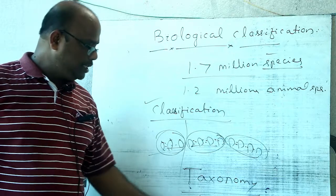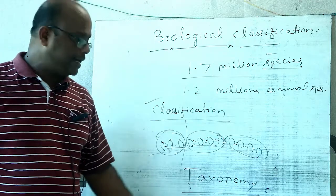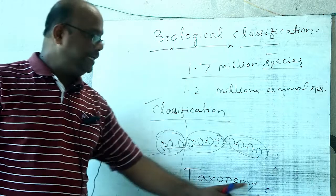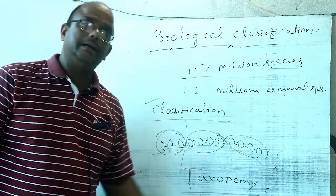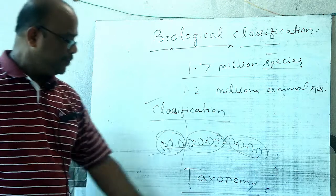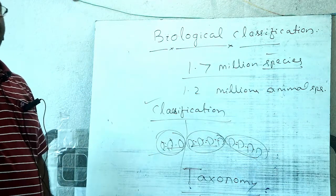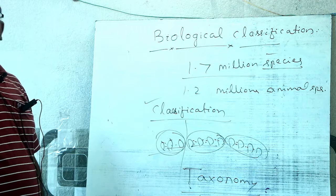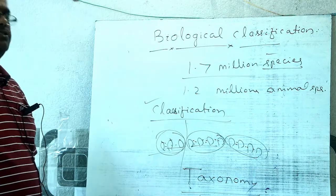In the modern era, taxonomy and systematics are treated as two different disciplines. Taxonomy deals with the study of identification, nomenclature, and classification of organisms, while systematics deals with the study of arrangement of organisms on the basis of their affinities or relationships.